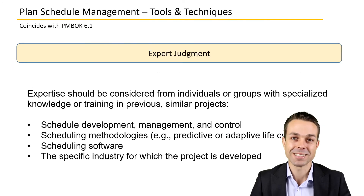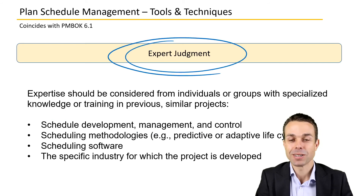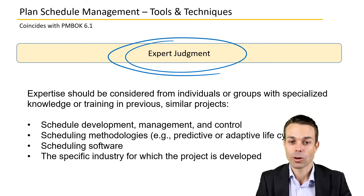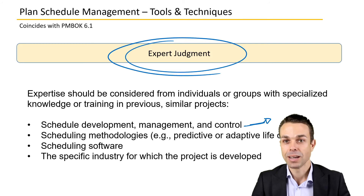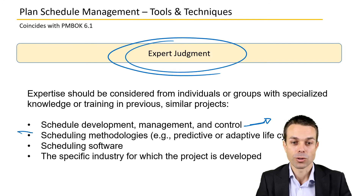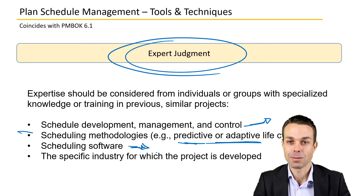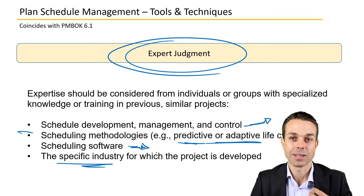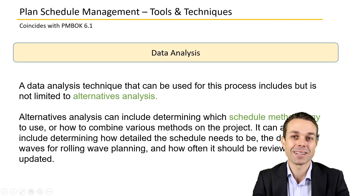For tools and techniques, expert judgment comes up again — we're going to need it a lot across all projects. This includes expertise in schedule development, management, and control: someone who's done this before, or an expert in developing schedules and estimating activity durations. It also covers scheduling methodologies — agile experts, waterfall experts — as well as scheduling software expertise, whether that's Microsoft Project, Kanban boards on Trello, or Jira, and specific industry expertise in whatever area you're working in.